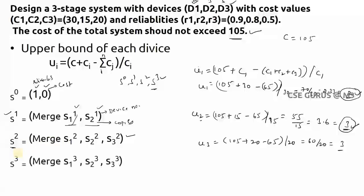For S^3, the third device can have at most three copies, so we find S_1^3, S_2^3, and S_3^3 for one, two, and three copies. After merging all values at each stage, apply the purging/dominance rule and check that total system cost does not exceed 105. The final S^3 gives the answer.